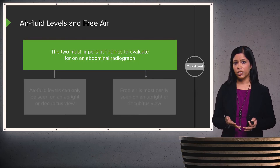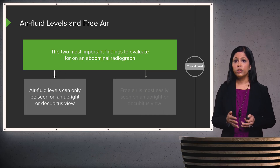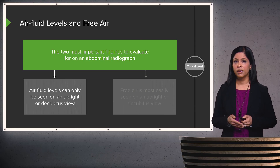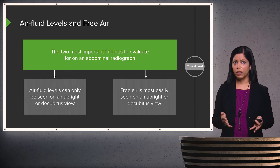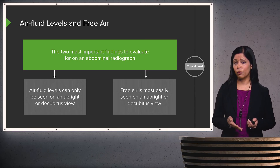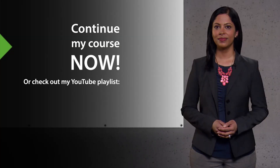The takeaway points from this lecture are that you really need to look for air-fluid levels and free air within the abdomen — those are the two most important findings, and they're best seen on an upright or decubitus view. Free air is most easily seen on these views and is a finding you really don't want to miss. Now that you have the background knowledge of abdominal anatomy, we can move on to discussing pathology and its appearance on an abdominal plain film. We'll see you next time.